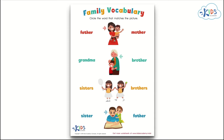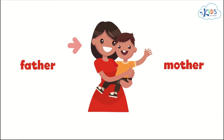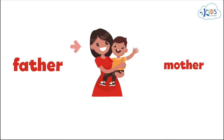Hello! Let's get started on the worksheet: family vocabulary. Let's read the directions — circle the word that matches the picture. Look at the picture in the first row: it's a woman holding a boy. The arrow is pointing to the woman. Is she a father or a mother? Yes! A mother! Good answer!